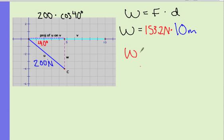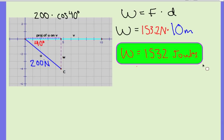So that means that the work she's exerting on the boat for 10 meters is 1,532 joules. That's not that difficult if you draw it out and get a good picture of what that looks like.